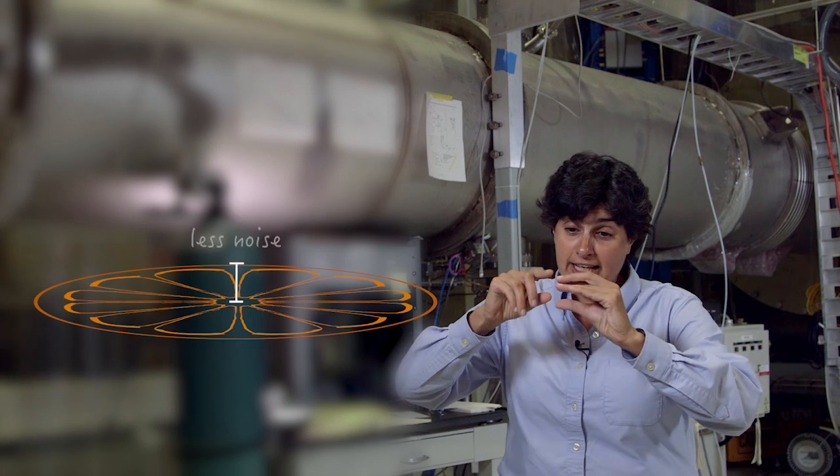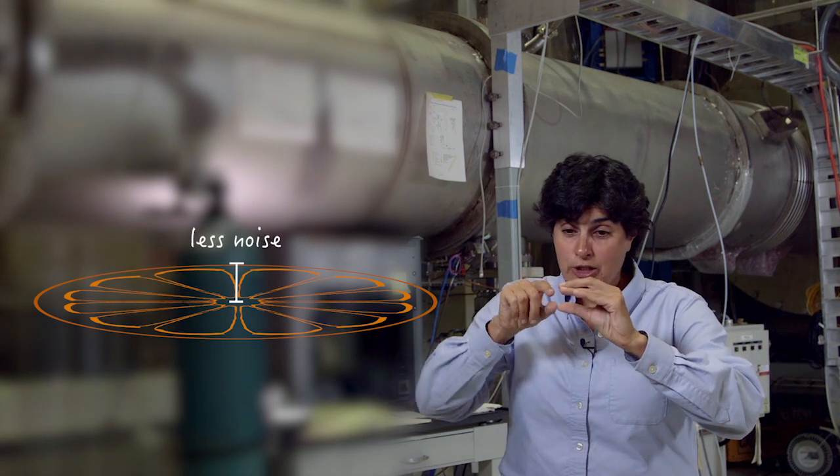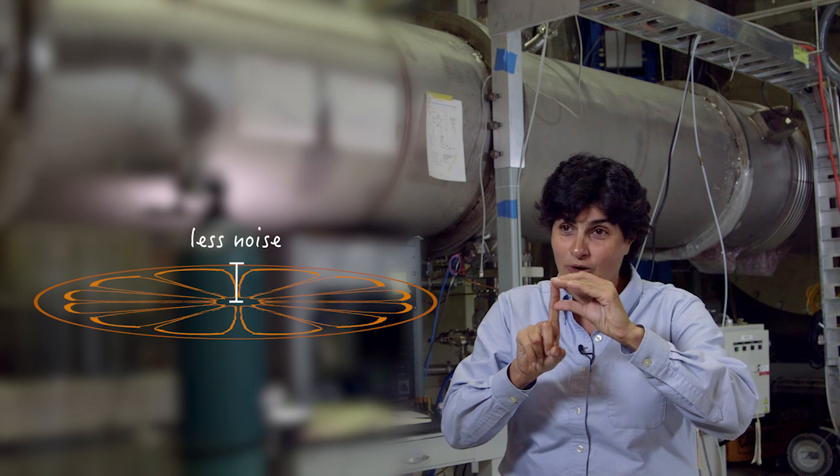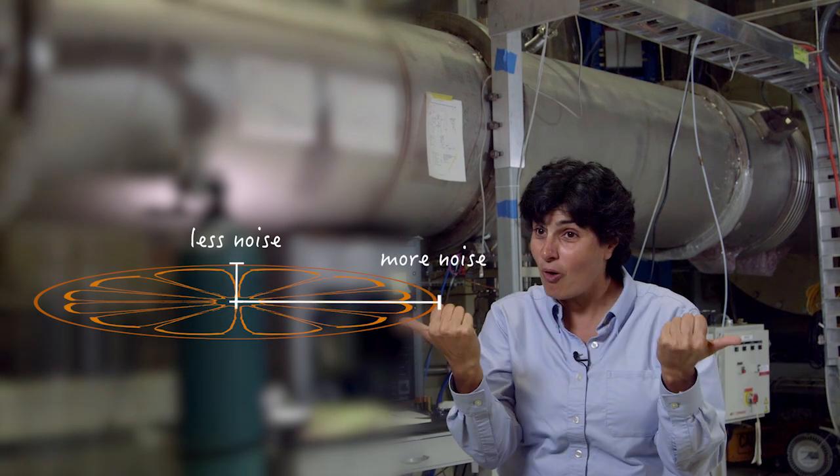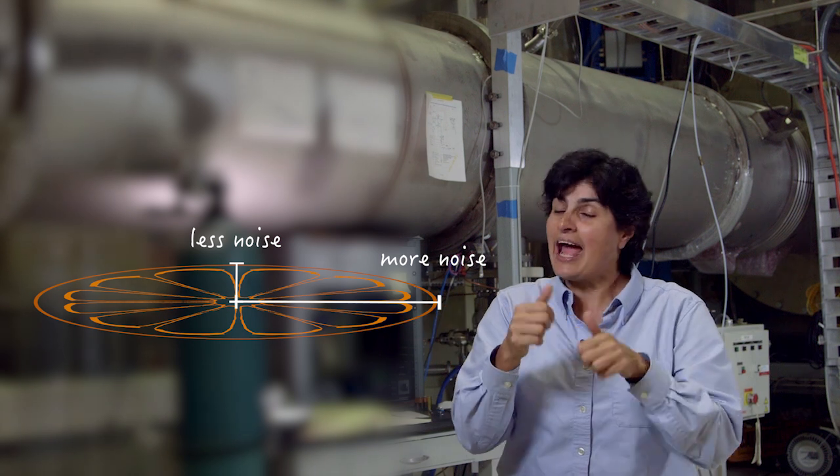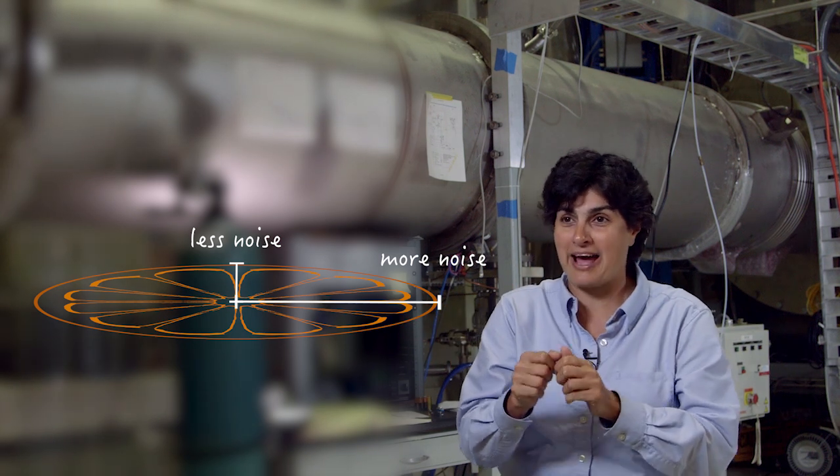And now what you see is that along the thin part of the ellipse, you have smaller, less noise than your original circle did. But along the long part of the ellipse, you have more noise than your original circle did. And that's what we're observing on the spectrum analyzer.